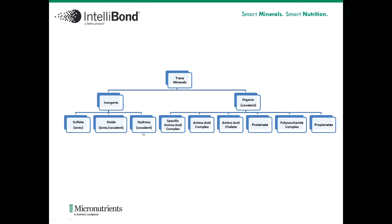Finally, in the inorganic category, we have the hydroxy trace minerals that have a unique crystalline structure and covalent bonding that allows them to hold tighter through the rumen and make it to the small intestine. Then we have the organic trace minerals — again, covalently bonded. There are many types of organic trace minerals: specific amino acid complexes, amino acid complex, amino acid chelate, proteinate, polysaccharide complex, and propionates. These are all different types of organic trace minerals, sometimes referred to as chelated. These minerals vary in their bond strength and efficacy to the animal depending on what is in that carbon-containing matrix for the ligand.